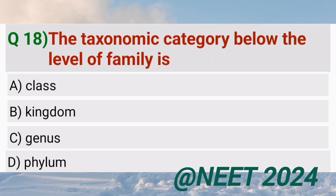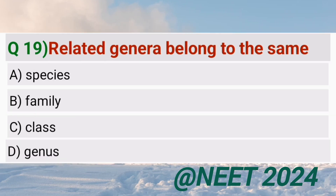The taxonomy category below the level of family is genus. Related genera belong to the same family.